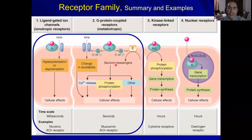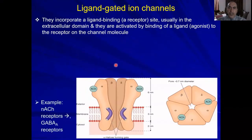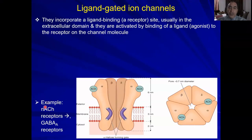Let us delve into details about ligand-gated ion channels. This is the channel. There is a kink here with these alpha-helices — they are making a gate, so it's closed. Upon binding of the ligand — in the case of nicotinic acetylcholine receptors it's acetylcholine, and if it is a GABA-A receptor, this ligand will be GABA. Please remember GABA-A.